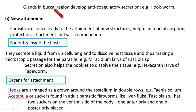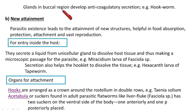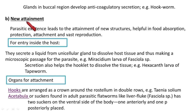Glands present in the buccal region of blood-sucking parasites can develop anti-coagulatory secretions to suck more blood in one bite. Parasites that have an alimentary canal possess certain glands that secrete anti-coagulatory substances. The next type of adaptation under morphological adaptations is new attainment — some structures are developed to support a comfortable parasitic mode of life.